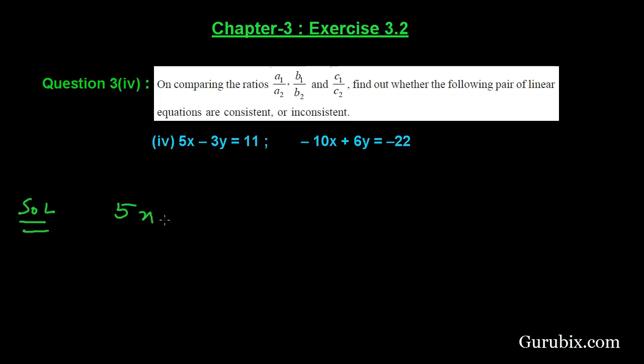Let us try to solve it. First of all, we shall write the given equations in its standard form. Therefore, the standard form of the first equation will be 5x minus 3y minus 11 equals to 0.